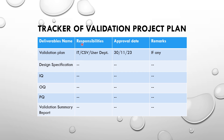In the second column, we need to mention about the responsibilities — that is, which department will be responsible to prepare, review, execute, or approve that particular document. For example, it may be the IT department, CSV department, or user department.